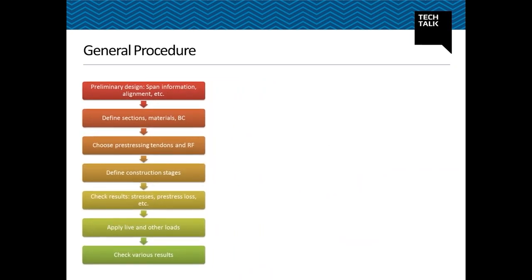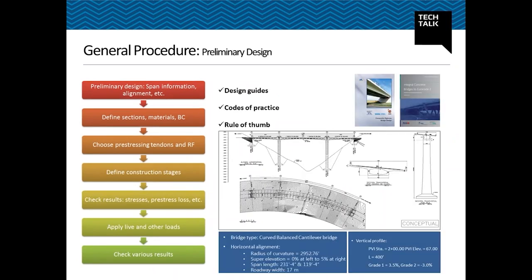Now let me take you through the general procedure of designing a PSC box girder bridge. First, you need to go through the preliminary stage, which consists of scheme design such as getting basic information on the span or alignment of the bridge. You need design guides such as BS code, Euro code, or Australian code, and it is practical to have examples or codes of practice.